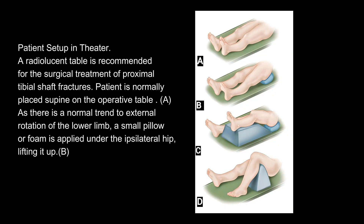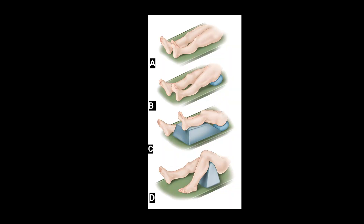Patient setup in theater. A radiolucent table is recommended for the surgical treatment of proximal tibial shaft fractures. The patient is normally placed supine on the operative table. As there is a normal trend to external rotation of the lower limb, a small pillow or foam is applied under the ipsilateral hip, lifting it up. If an external fixator or a plate will be used, a foam ramp is applied under the lower extremity, allowing for the elevation of this leg in comparison with the contralateral one. The goal of this elevation is to allow for the use of fluoroscopy in multiple projections without interference of the opposite leg.